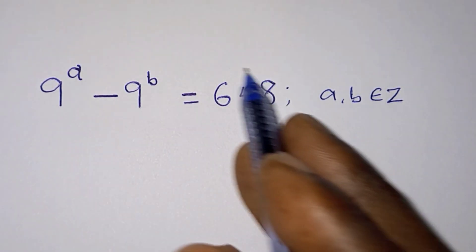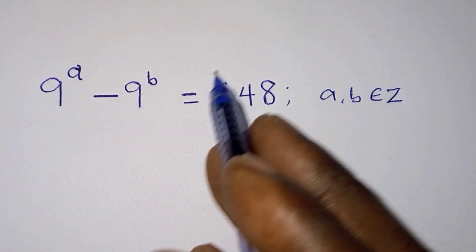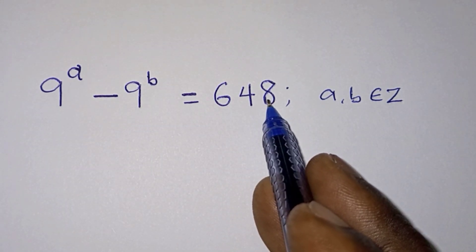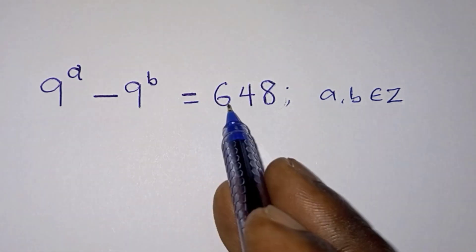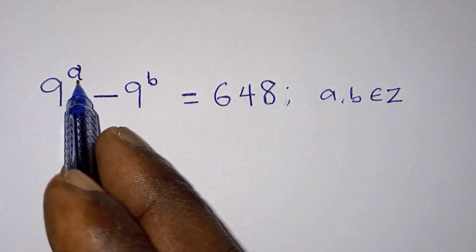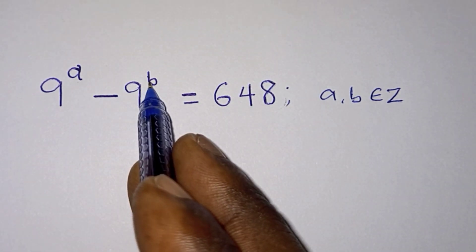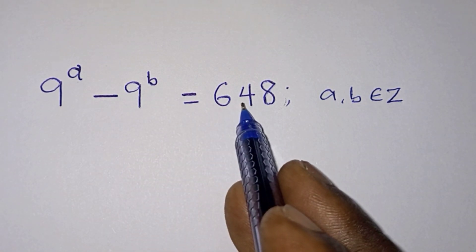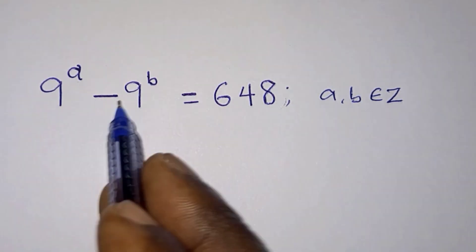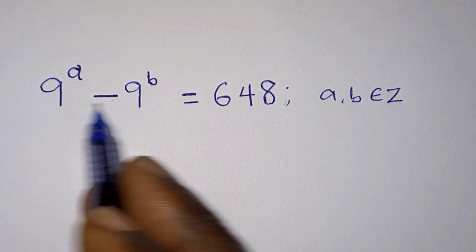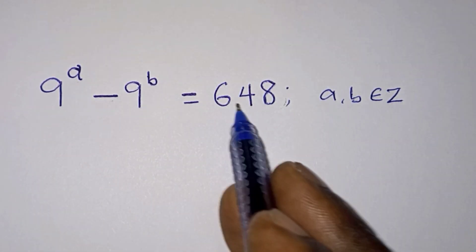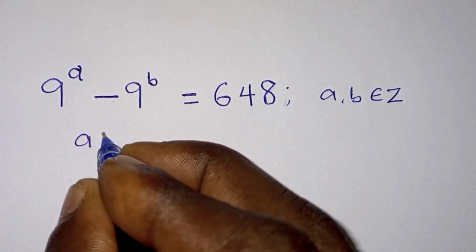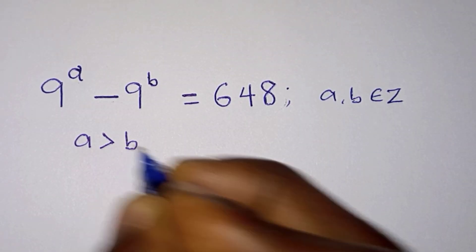On the right hand side we see that we have a positive value, which is 648. The fact that this is positive means that a is greater than b — that is how we end up with a positive value here. We are taking the difference between them, and we have a positive answer, so we can quickly state that a is greater than b.